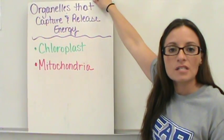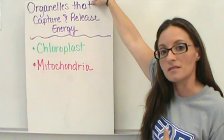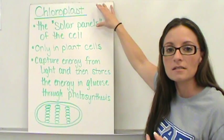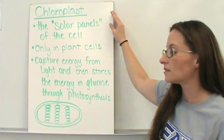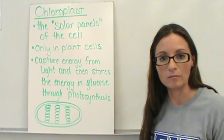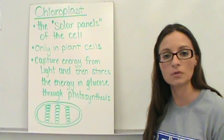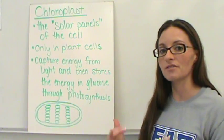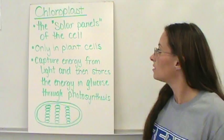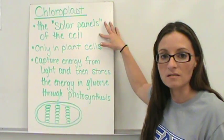These two organelles are used in our energy processes within our cells. Now, the chloroplast is the solar panels of the cell. These are only in plant cells if we're talking about plant or animal cells. They are not located in animal cells at all. We cannot take the energy from the sun to create our food. We actually have to consume it. So these are the solar panels of the cell.